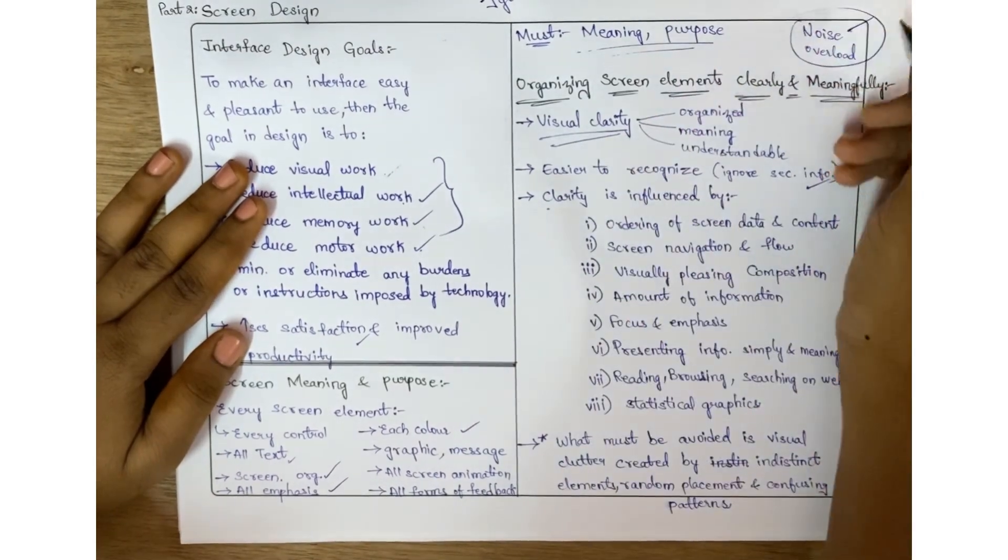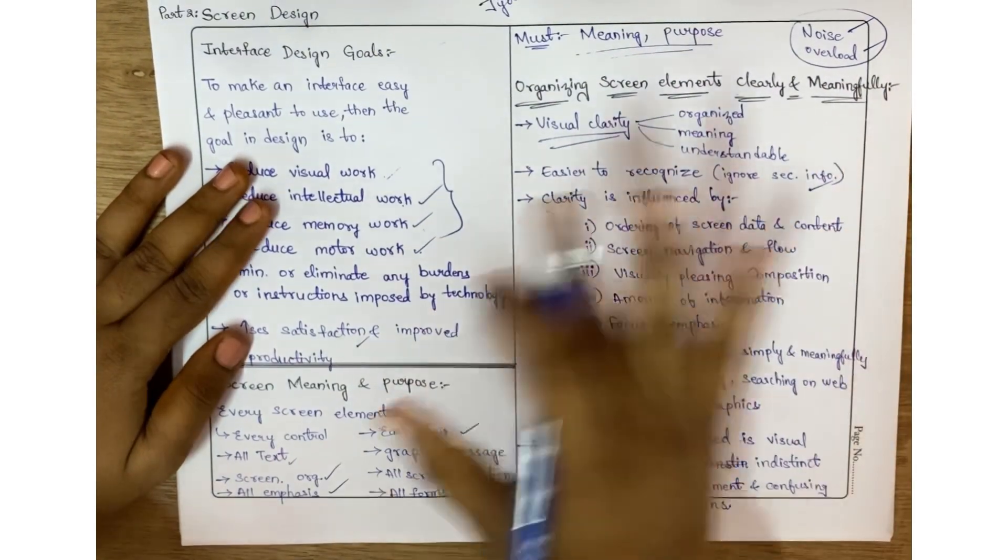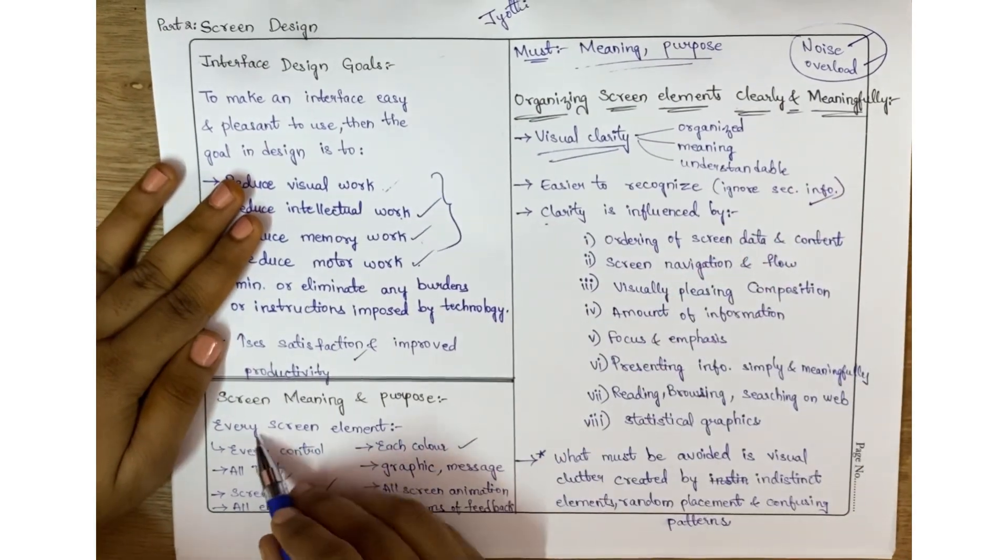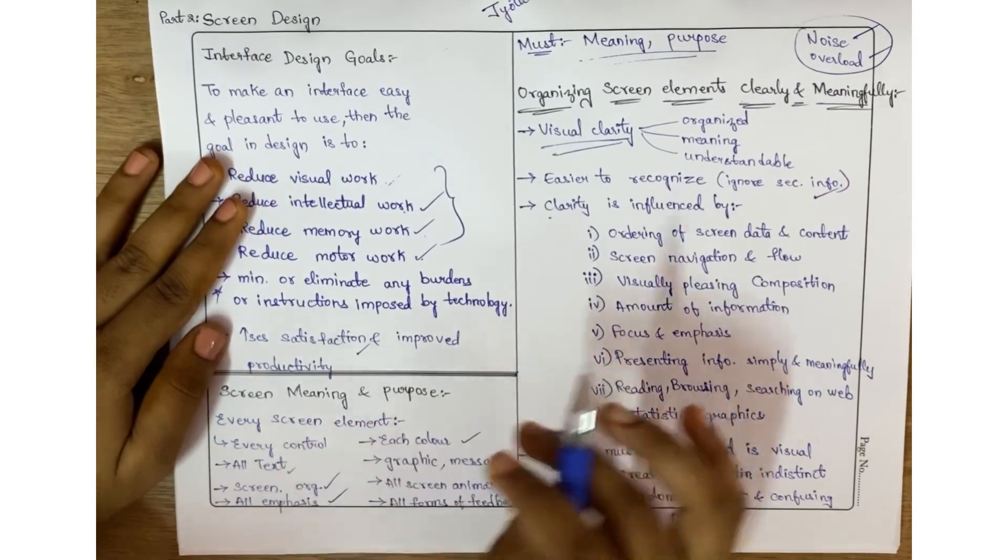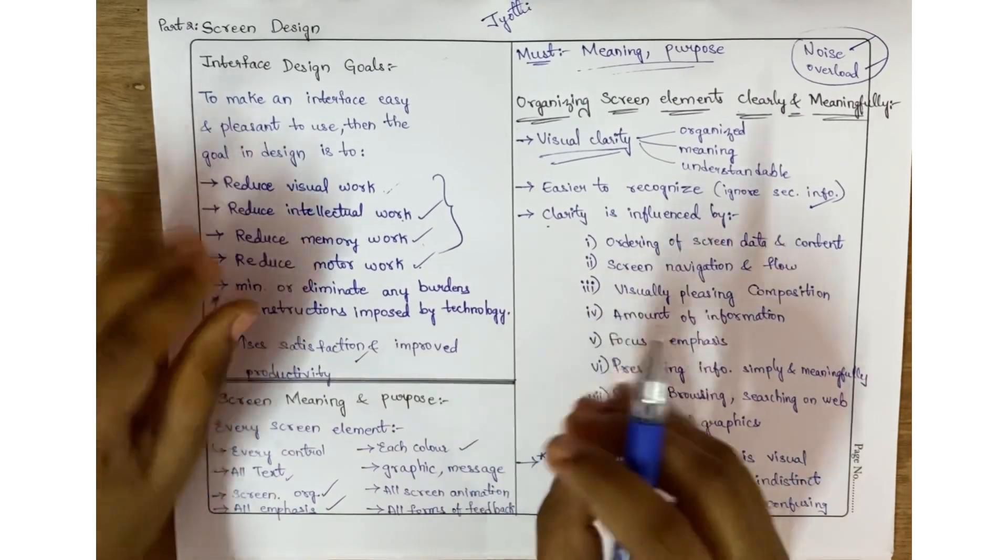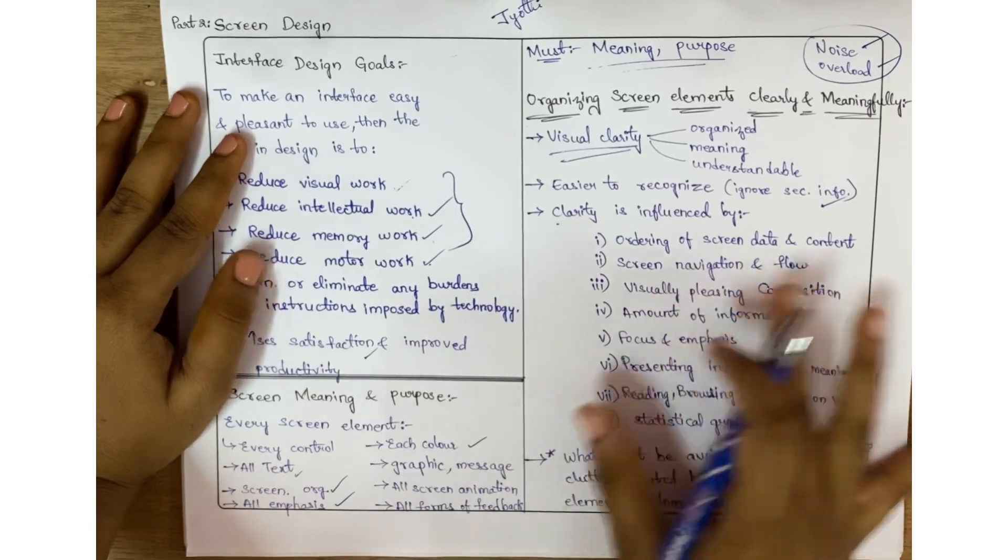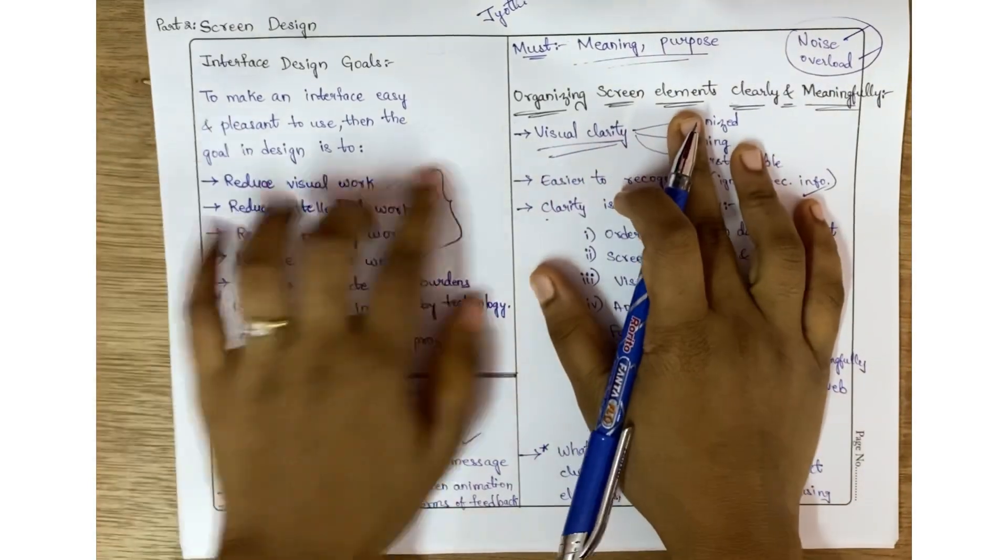It's like overloading for that screen, so we need to remove it if it does not serve any purpose. One more thing: all screen elements should provide features - they should be accessible for any color, any control, and all text.